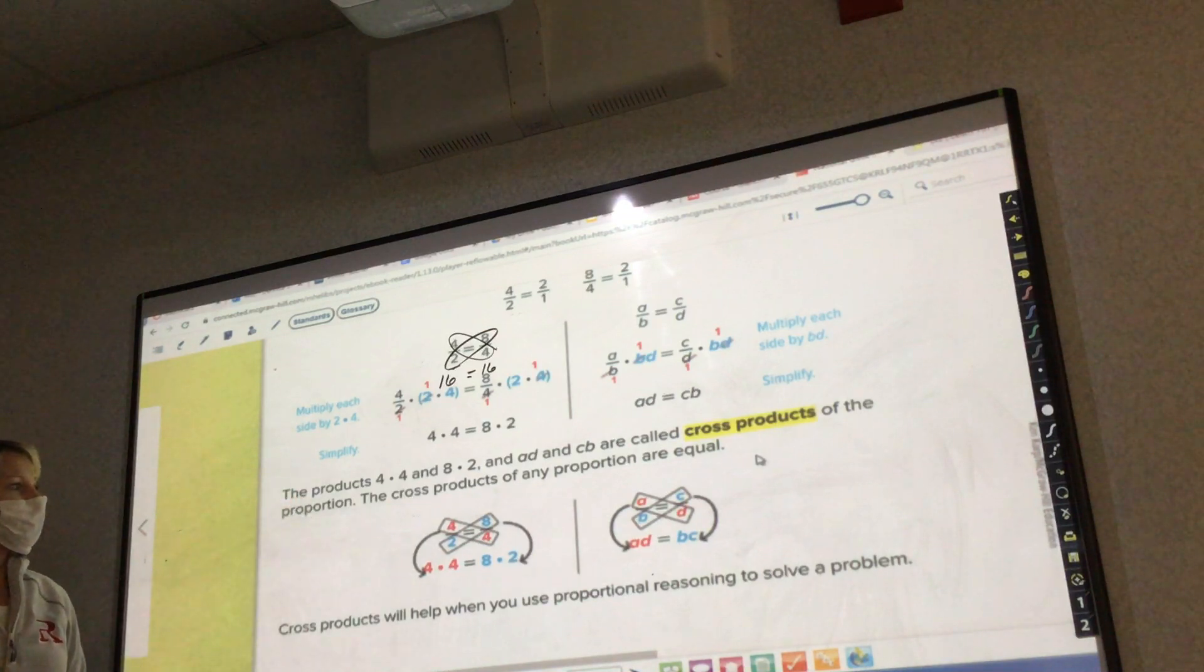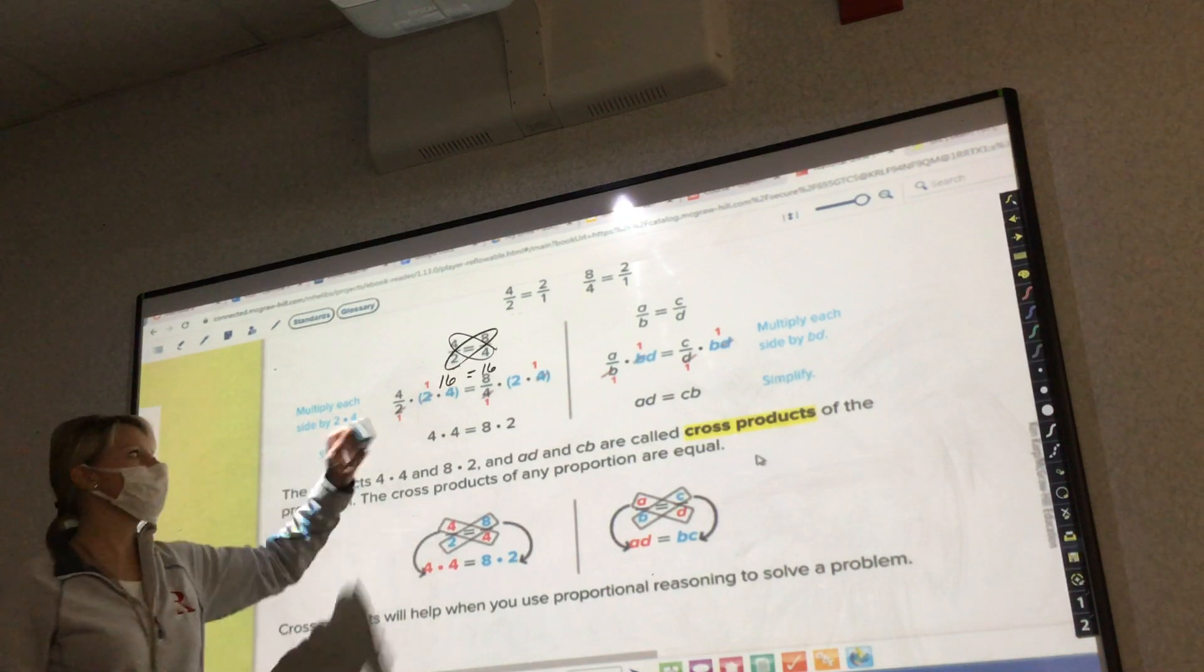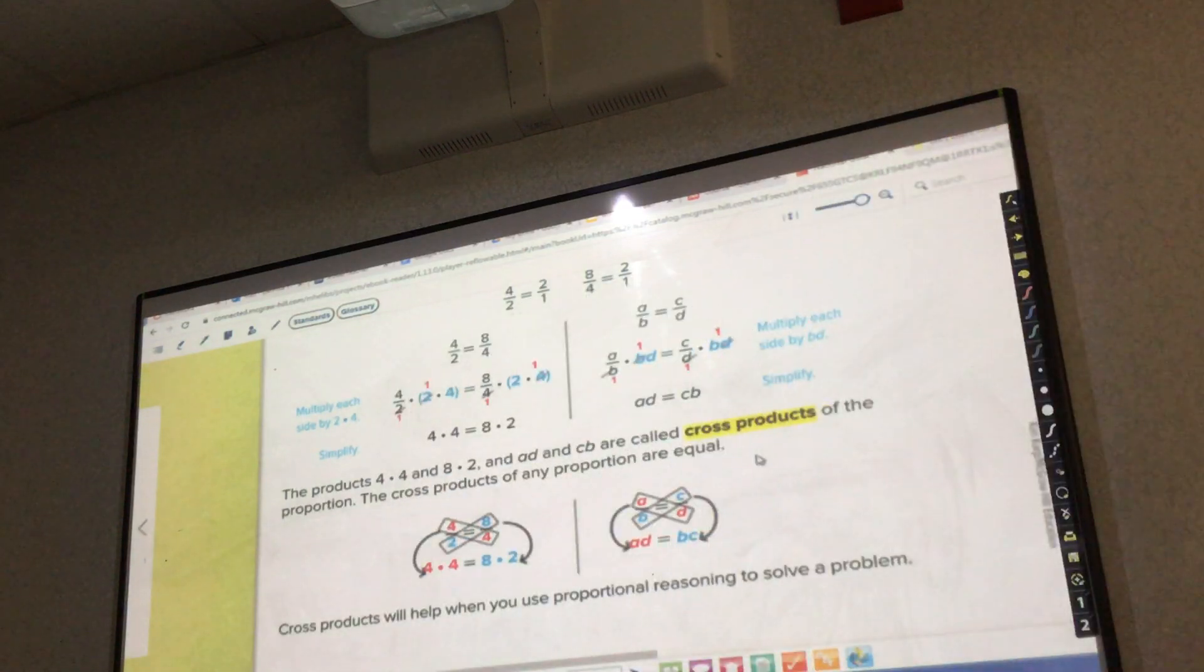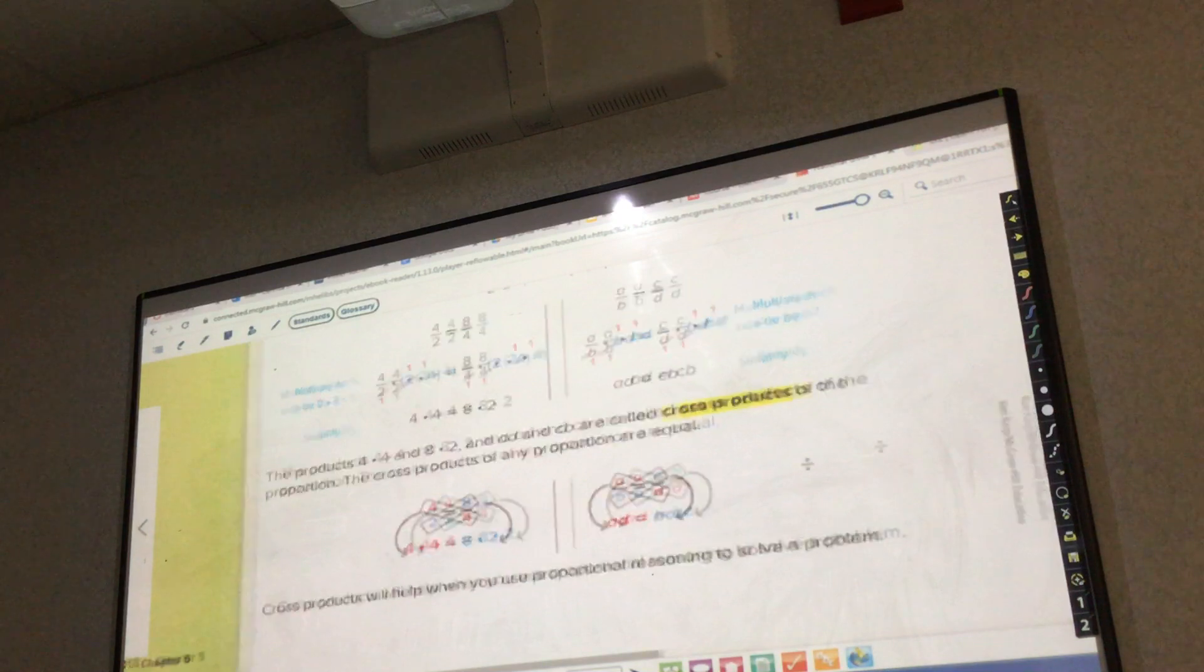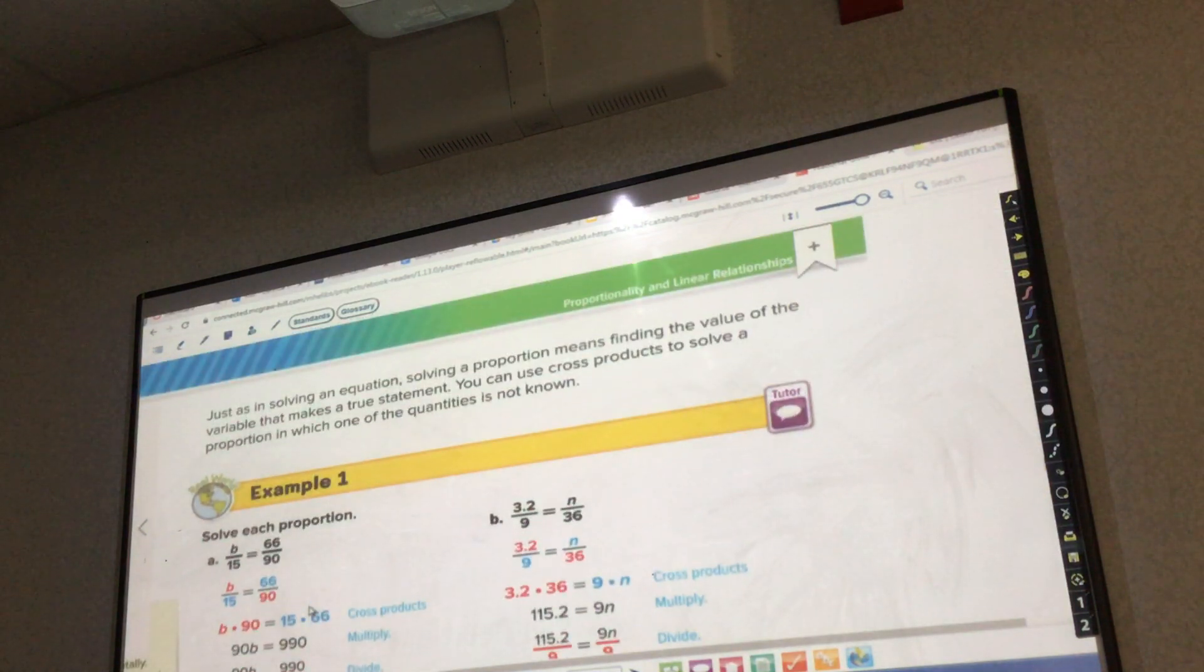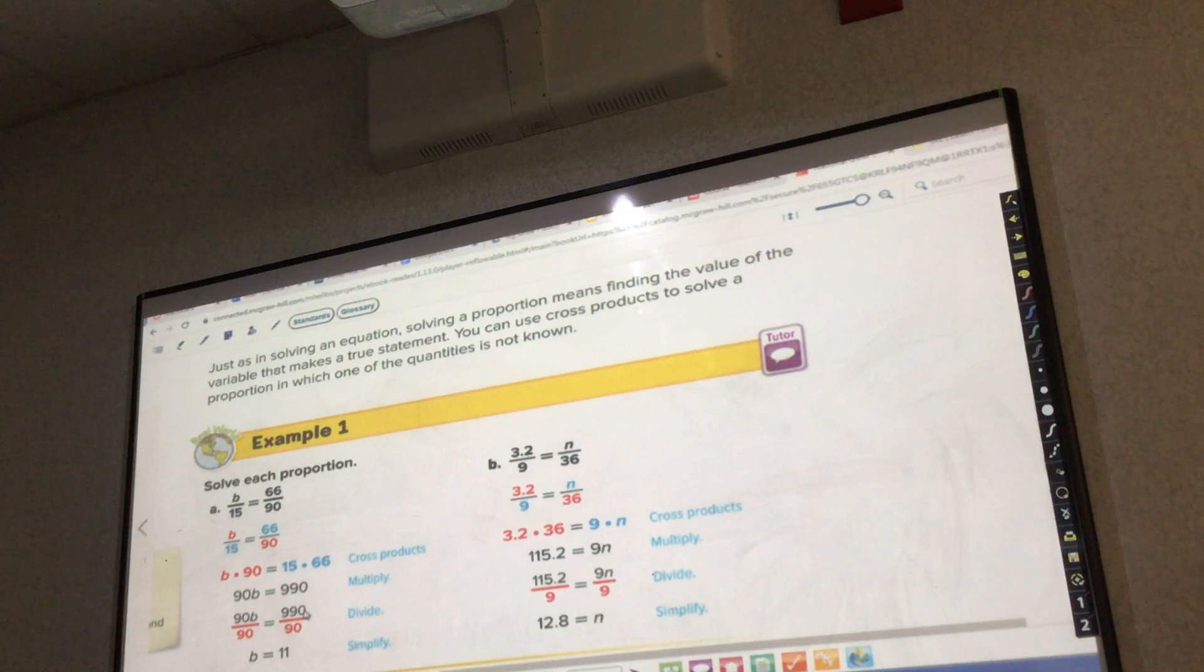The products four times four and eight times two, and A, D, and C, B are called cross products of the proportion. The cross products of any proportion are equal. Cross products will help when you use proportional reasoning to solve problems. Sometimes those fractions aren't easy, so that's when we want to use the cross multiplication. Just as in solving an equation, solving a proportion means finding the value of the variable that makes a true statement. We've already kind of worked on this during our bell work. When I give you letters, because when you guys do the is over of equals percent over a hundred, sometimes we're trying to figure out what that percent is and I give you a letter there. That's the same thing, you're using the cross product.